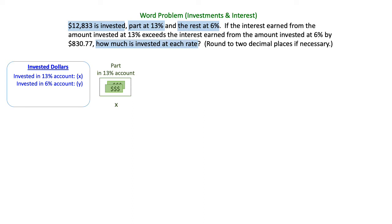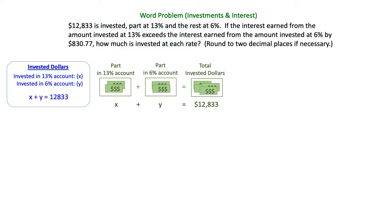So part of the $12,833 is invested in the 13% account, which is X. The other part is invested in the 6% account, which is Y. And the total invested was $12,833. That gives us our first equation, X plus Y equals $12,833.